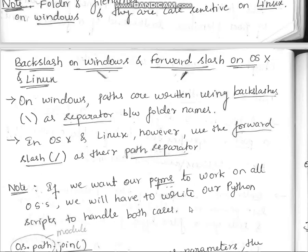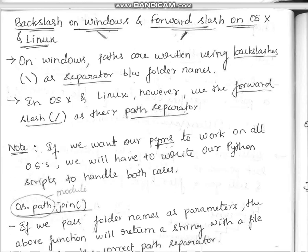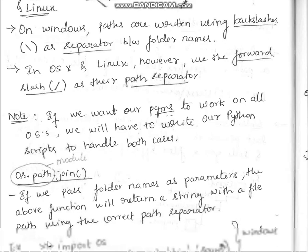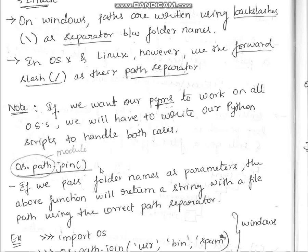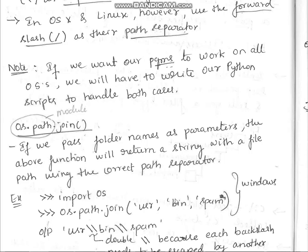If we want our programs to work on all operating systems, we have to handle both cases. We do this by importing the 'os' package. Using 'os.path', we can make our programs run correctly by specifying paths. The function 'os.path.join()' takes folder names as parameters and returns a string with the correct path separator for the current OS.